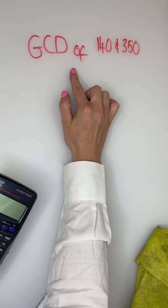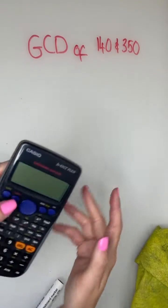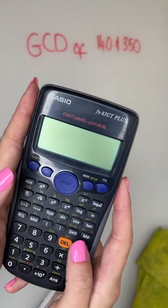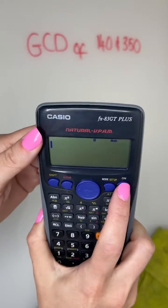I'm going to show you how to find the greatest common divisor of 140 and 350 using calculator. There you go, it's working.